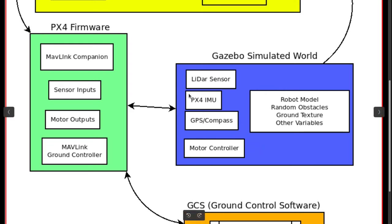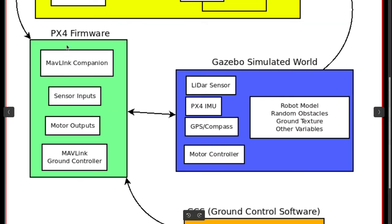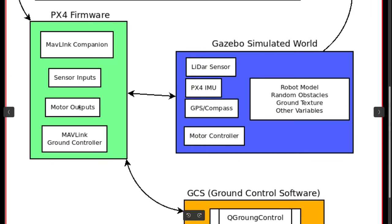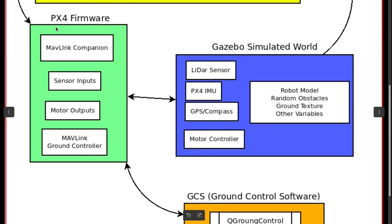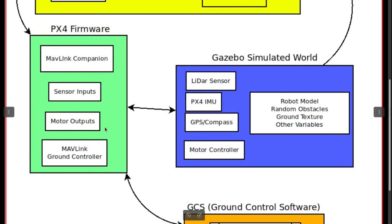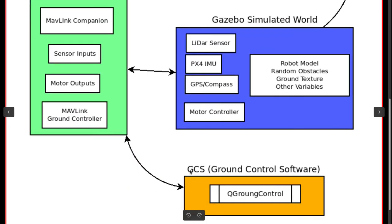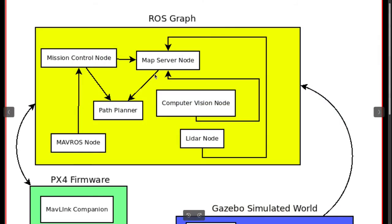Gazebo can publish sensor data and take input for motors. PX4 firmware will take the input data and through MAVLink companion it will publish data to ROS. The motor output can also be fed back to the Gazebo simulated world, and the output will also be sent to ground control software for visualization of how the drone is working. PX4 autopilot will control the Gazebo simulated drone and communicate with ROS and ground control software through MAVLink protocol.